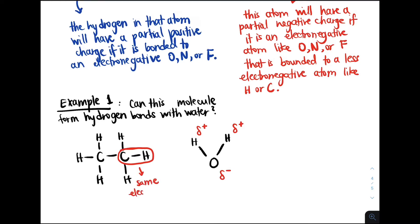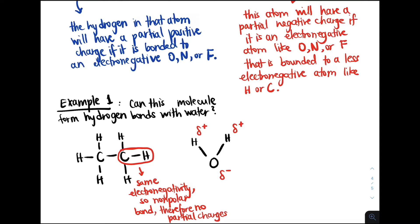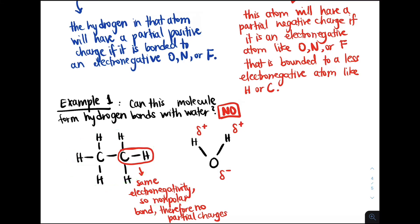Carbon and hydrogen have the same electronegativity, so they pull electrons with the same affinity. Therefore we won't see any polarity because they form a non-polar covalent bond — neither atom pulls electrons harder than the other. So partial charges are not going to form in the C-H bond, and we can conclude that this molecule cannot form hydrogen bonds with water. Yes, water has a hydrogen with a partial positive charge, but we didn't satisfy the second condition — an atom with a partial negative charge in this molecule.